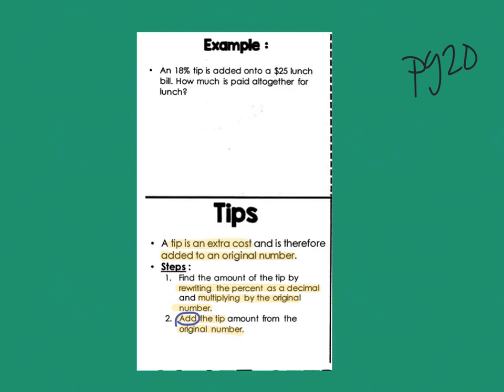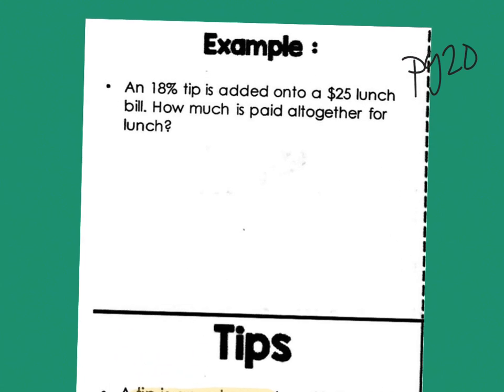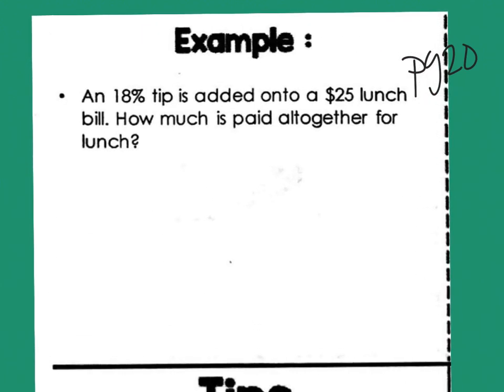So step one is to make a decimal. In order to make a percent into a decimal, you just move the decimal two times to the left from where it is. So in 18%, the decimal is at the far right because it's a whole number. So I'm going to move it two times. So 18% actually is .18.